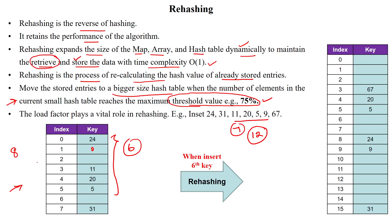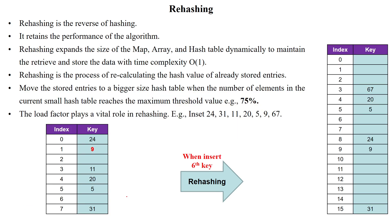Once 75% of memory size is filled in the hash table, we have to apply the rehashing process to double the given table. Here the table size is 8 memory locations. After inserting the 6th element, which reaches 75% — that is 6 divided by 8 equals 0.75 — it reaches the threshold value. Once it reaches the threshold value, we have to apply the rehashing process.